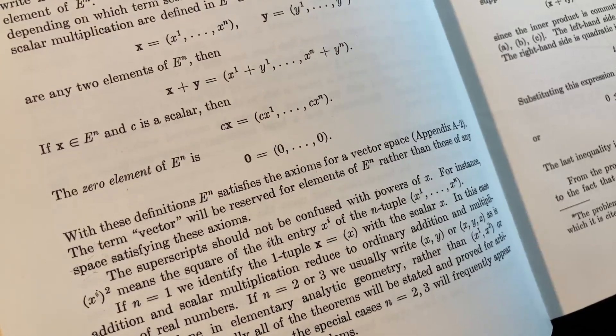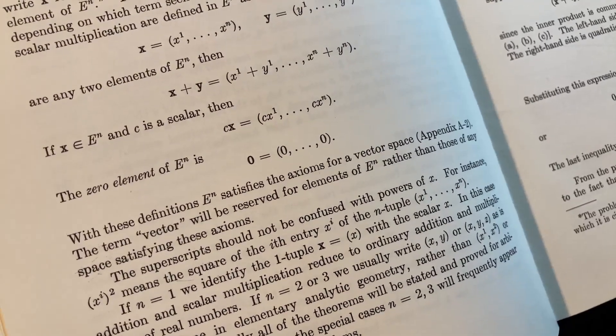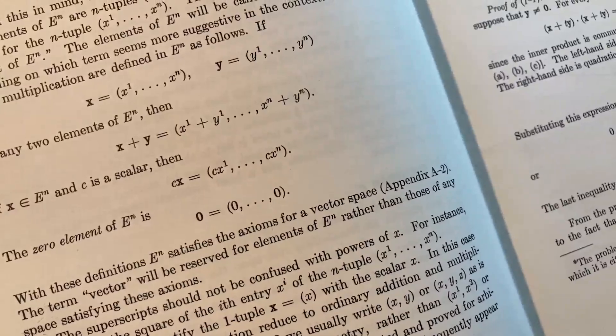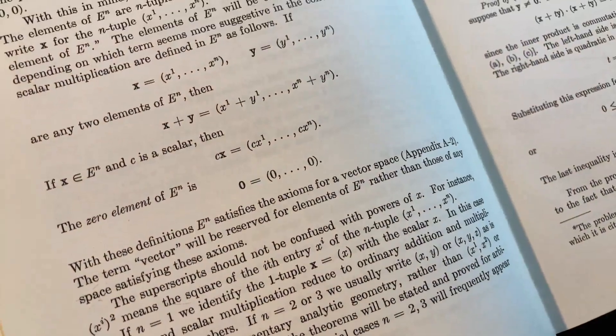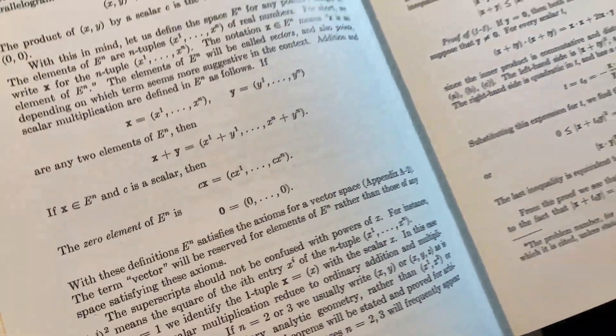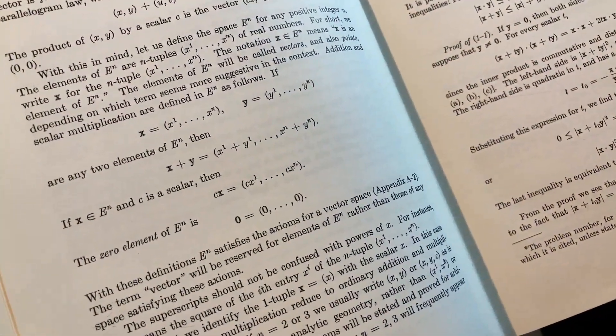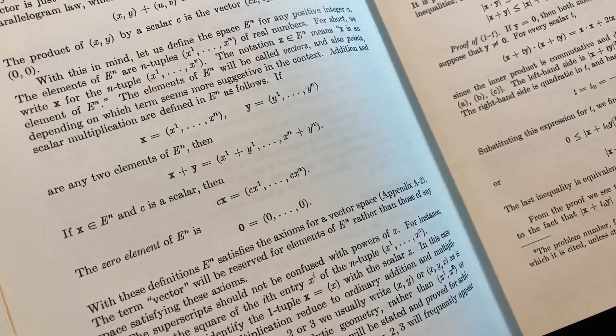Because with these definitions, EN, E to the N satisfies the axioms for a vector space, which is referenced in an appendix. So, what's a vector space? Well, I guess they want you to know linear algebra too. Again, advanced undergraduate, you're taking a course on this your last semester.